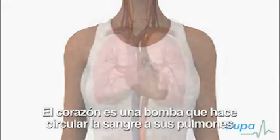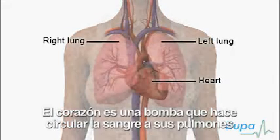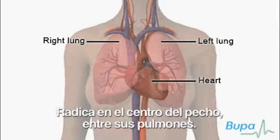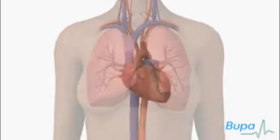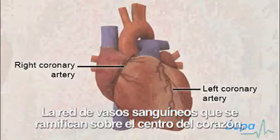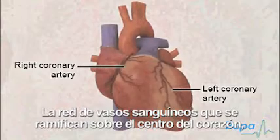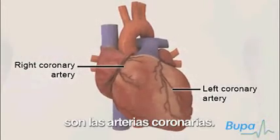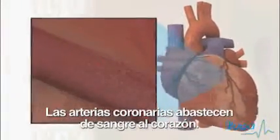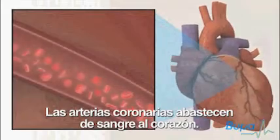The heart is a pump that circulates blood to your lungs and the rest of your body. It lies in the centre of your chest, between your lungs. The network of blood vessels that branch over the surface of the heart are the coronary arteries. The coronary arteries supply the heart with blood.